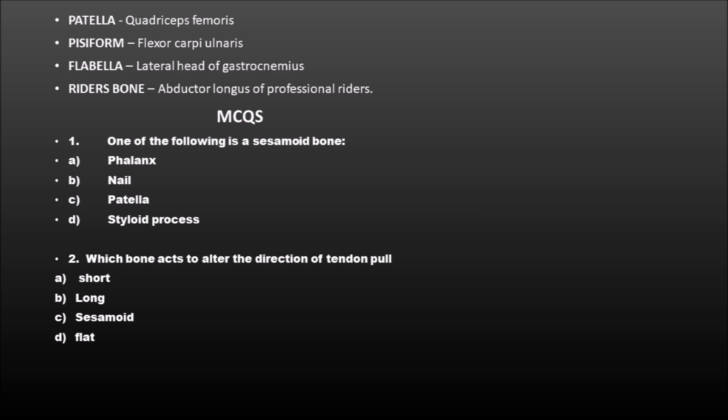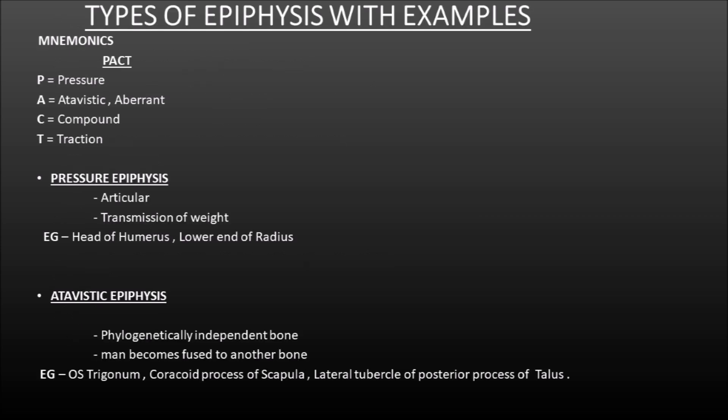The second MCQ: which bone acts to alter the direction of the tendon? The correct answer is option C. Now let us move on to the second most important topic, which is the types of epiphysis with examples. Remember the mnemonic PACT: P stands for pressure epiphysis, A for atavistic and aberrant epiphysis, C for compound epiphysis, and T for traction epiphysis.